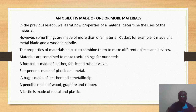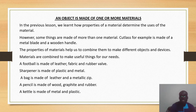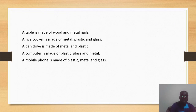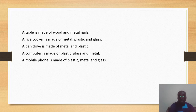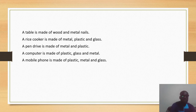A football is made of leather, fabric, and a rubber valve. A sharpener is made of plastic and metal. A bag is made of leather and a metallic zip. A pencil is made of wood, graphite, and rubber. A kettle is made of metal and plastic. A table is made of wood and nails. A rice cooker is made of metal, plastic, and glass. A pen drive is made of plastic and metal. A computer has parts made of plastic, glass, and metal. A mobile phone also has parts made of metal, plastic, and glass.